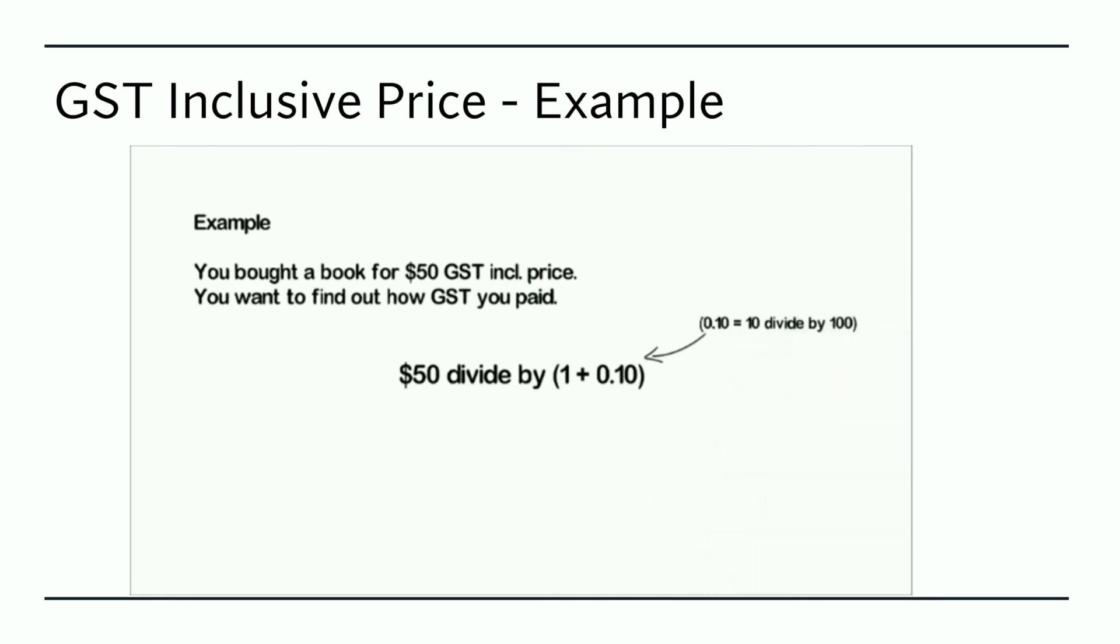So then $50 divided by 1.1 is equal to $45.45 GST exclusive, which means that the amount of GST paid was $4.55.